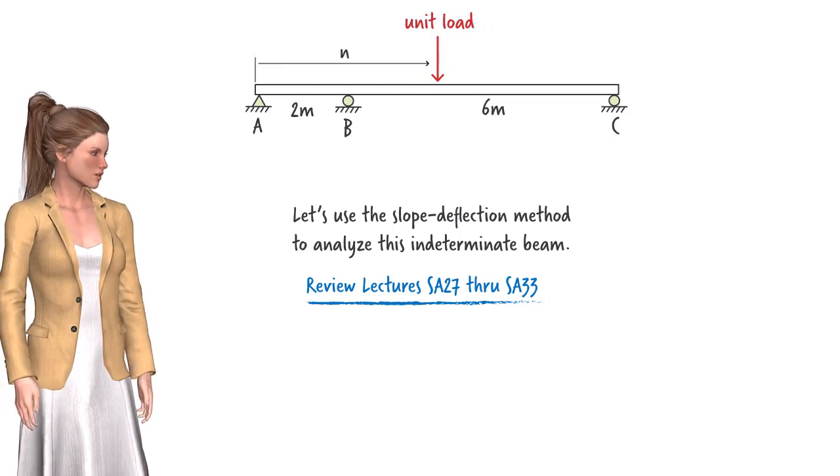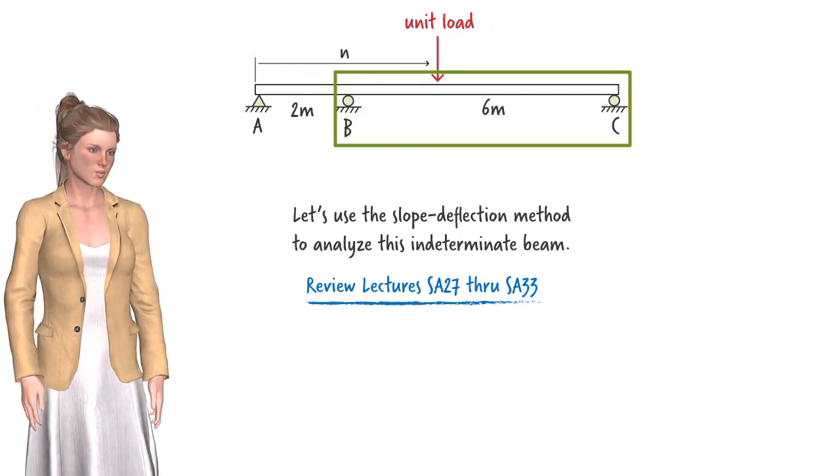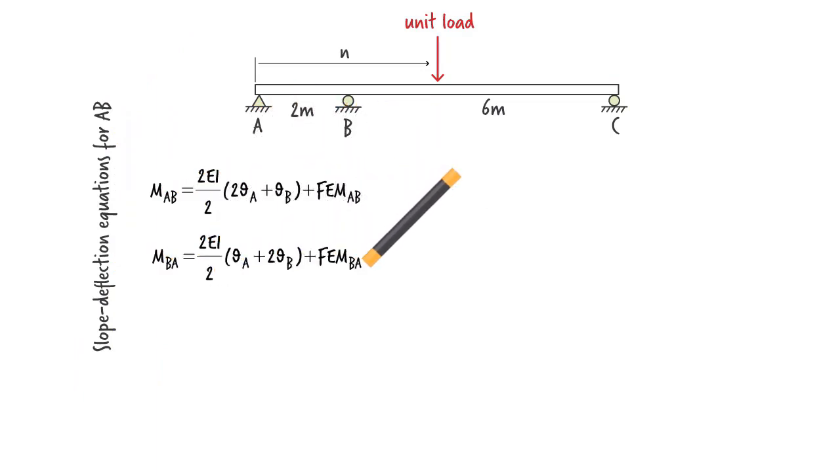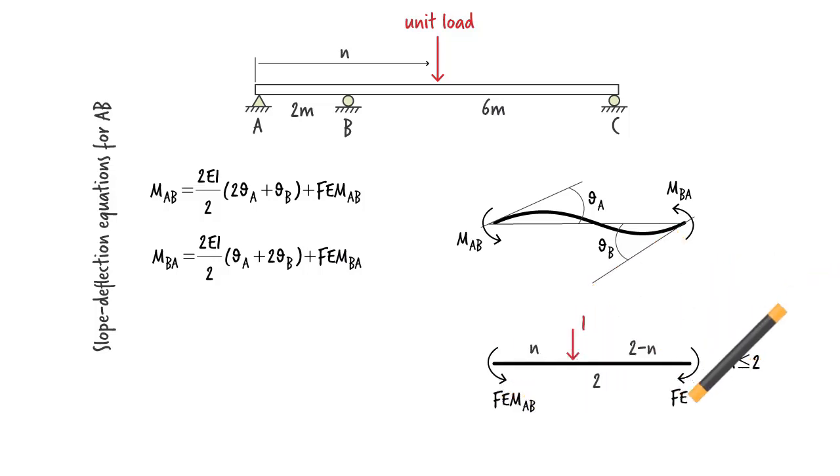The beam consists of two segments, AB and BC. We need to write a pair of slope-deflection equations for each segment. For AB, they are... Here, theta A and theta B are the member's end rotations. And M_AB and M_BA are the member end moments. Concerning the fixed end moments in the equations, the presence of a concentrated load on the beam leads to two scenarios. Scenario 1: Where N is less than or equal to 2, the fixed end moments are computed using equations. Scenario 2: Where N is greater than or equal to 2, the fixed end moments are 0.